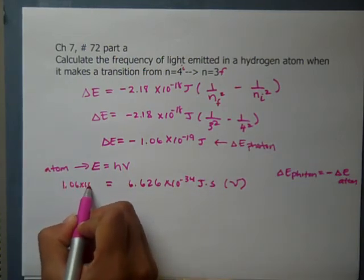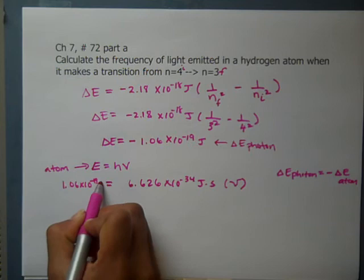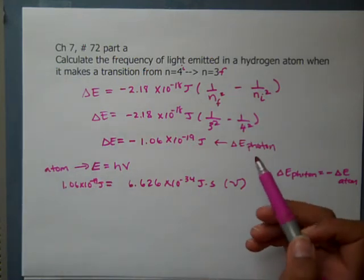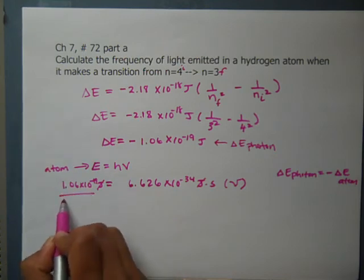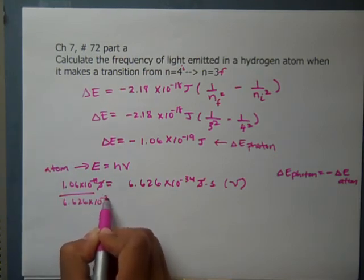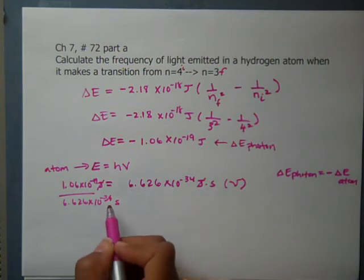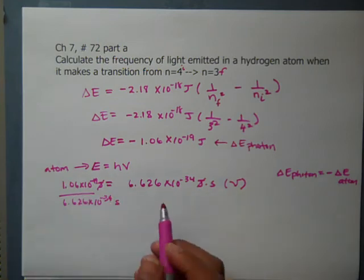Whatever our number is, we flip the sign to get 1.06 times 10 to the negative 19 joules. Joules cancel, and we divide by 6.626 times 10 to the negative 34 seconds to get per second as the unit.